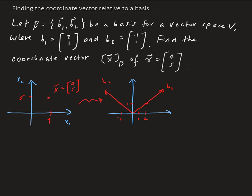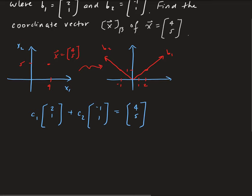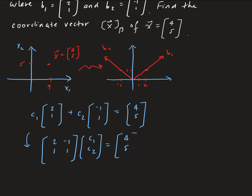This is not too difficult to solve. Basically, the values we're going to find in terms of b1 and b2 will be the weights. So we have c1 times [2, 1], plus c2 times [-1, 1], equal to our vector in the standard basis, which is [4, 5]. So we have a system to solve for. This gives us the matrix equation: the matrix with columns [2,1] and [-1,1], times [c1, c2], equals [4, 5].